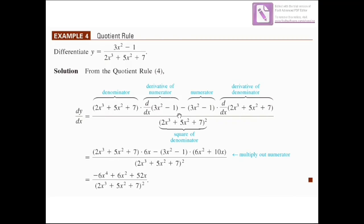The derivative of 3x² − 1 is 6x. The derivative of 2x³ + 5x² + 7 is 6x² + 10x + 0. All divided by (2x³ + 5x² + 7) squared. Multiplying the brackets out, the final result is: (−6x⁴ + 6x² + 52x) divided by (2x³ + 5x² + 7) all squared.